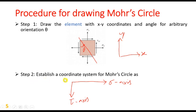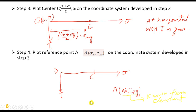Step 2: establish a coordinate system for the Mohr circle, where the horizontal axis (sigma) is positive to the right and the downward vertical axis (tau) is taken as positive. Step 3: plot the center C at (sigma x plus sigma y)/2, comma 0 on the coordinate system. Since the second coordinate is zero, center C lies on the horizontal sigma axis.